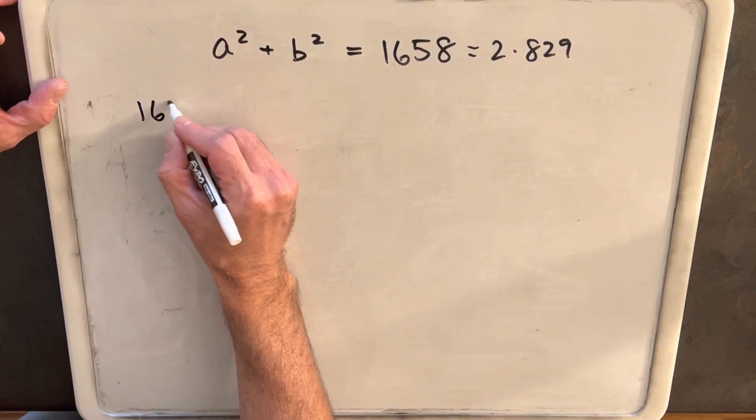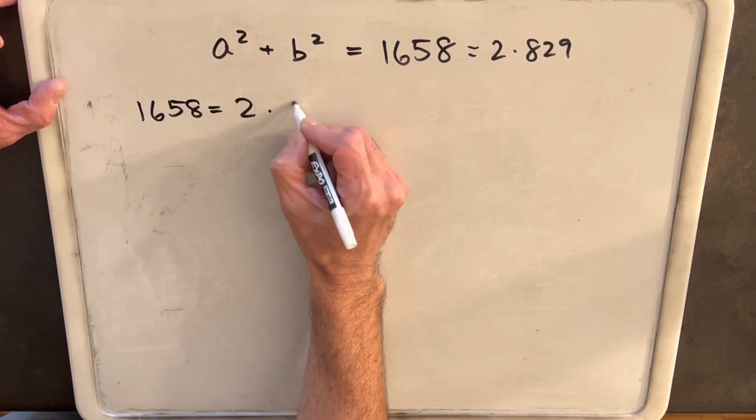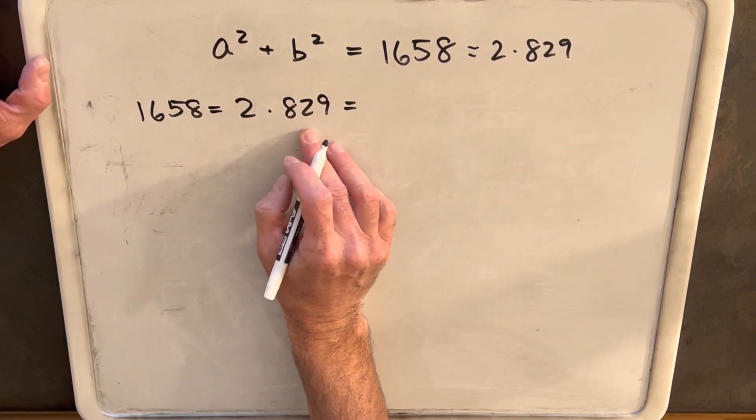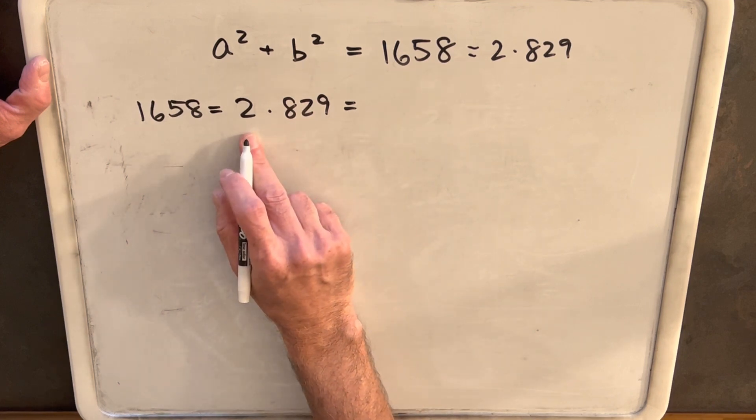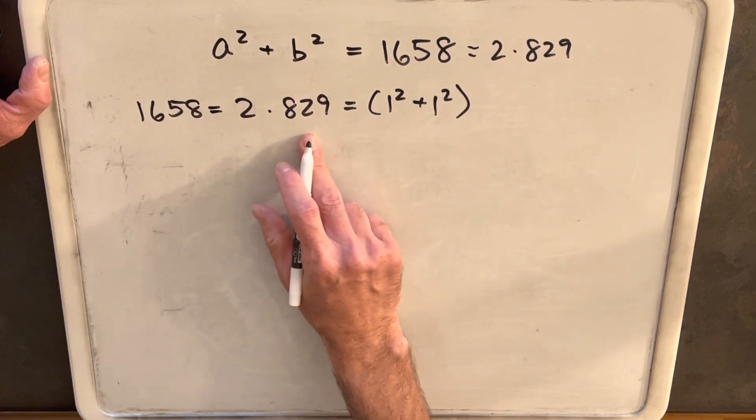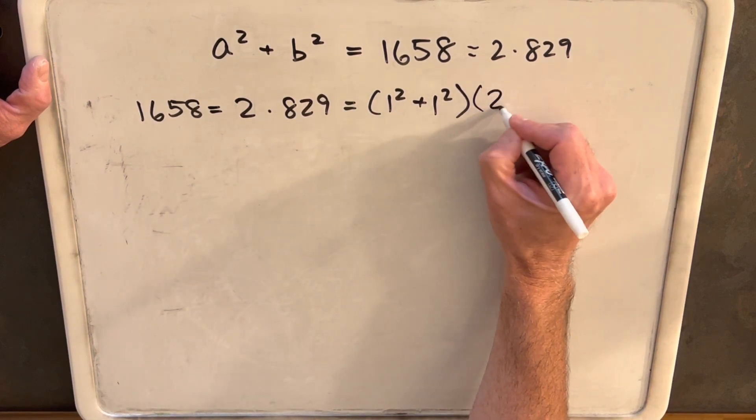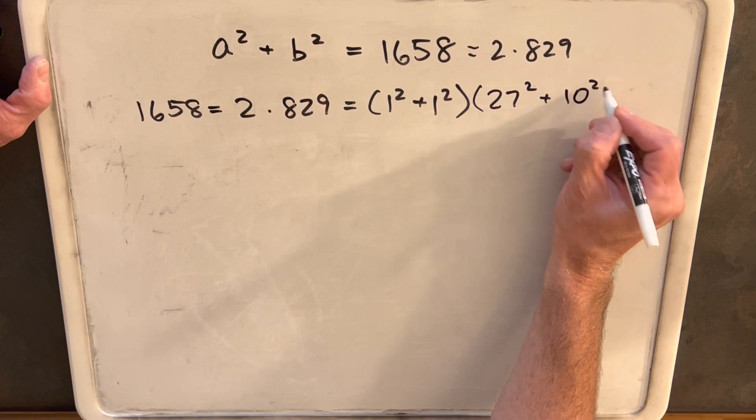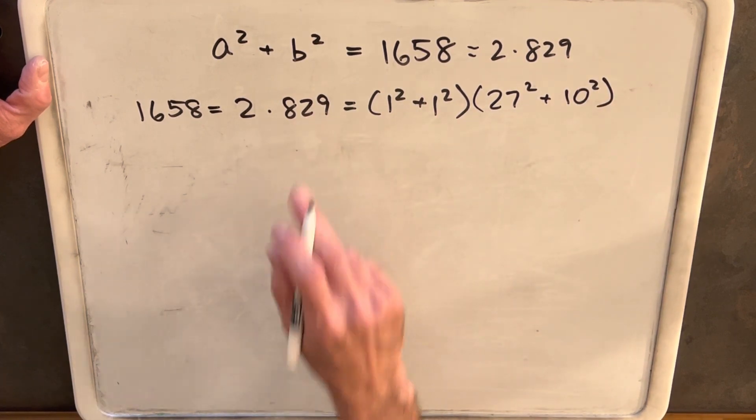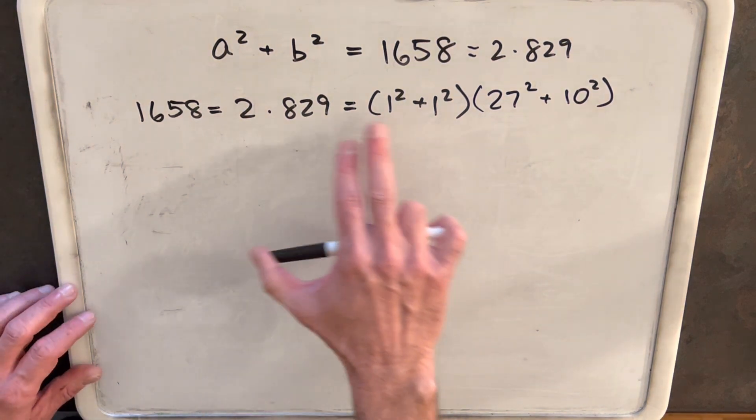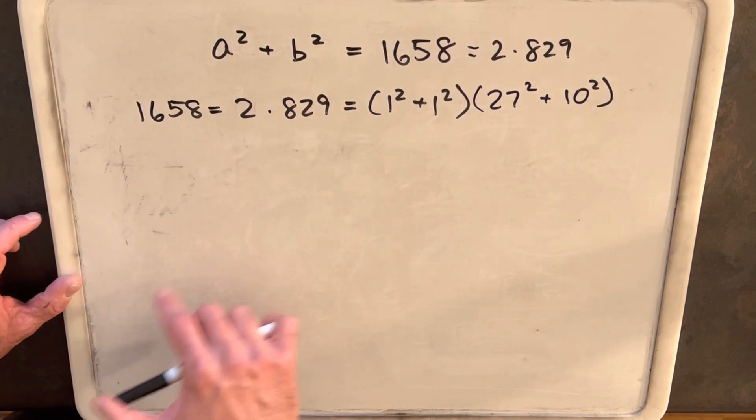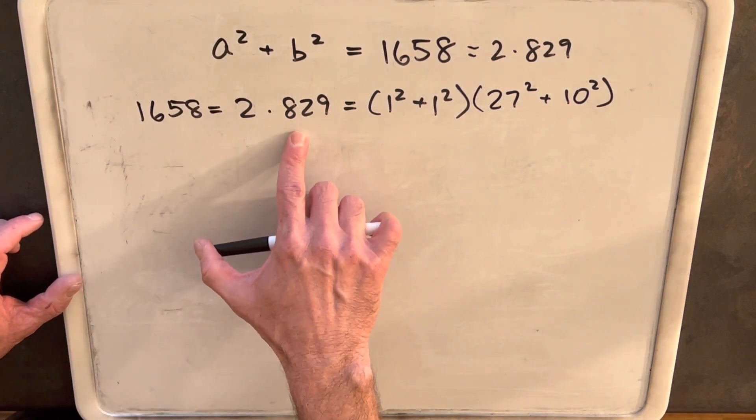Next we're going to do something that's going to seem kind of bizarre if you haven't seen this, but we're going to rewrite each of our terms as a sum of two squares as well. So we write 2 as 1² + 1², and then we write 829 as 27² + 10². That's 729 and 100, which equals 829. How did I find this? Well, that was mostly guessing and checking, or just noticing—if you notice that 729 is a perfect square, then maybe this will stick out for you.